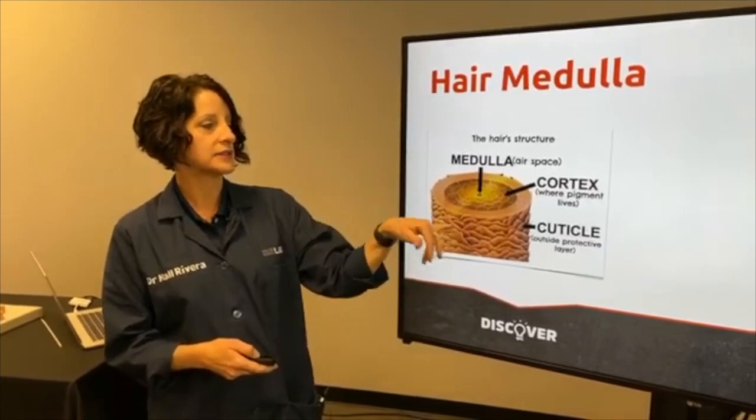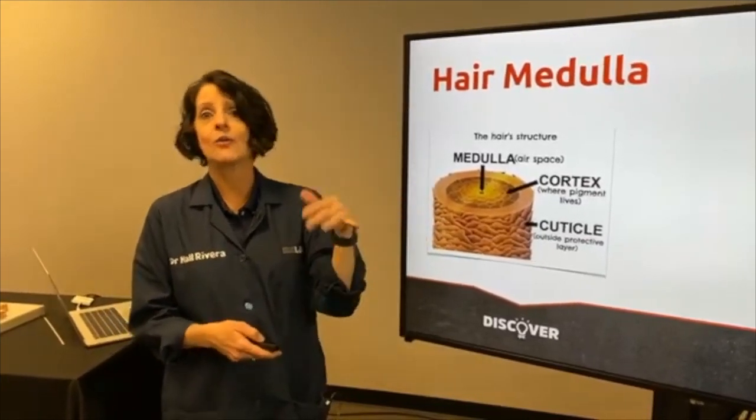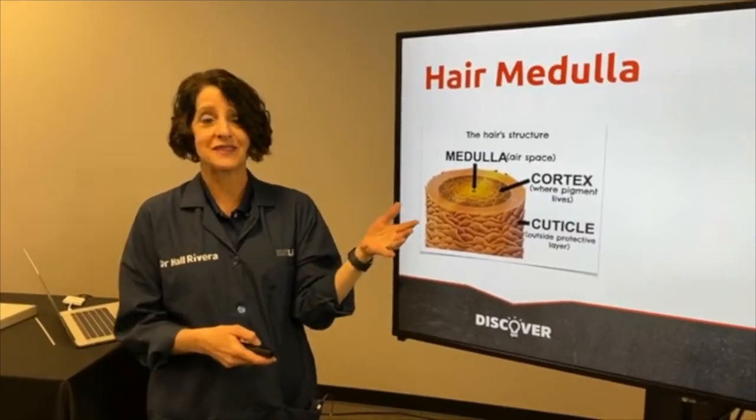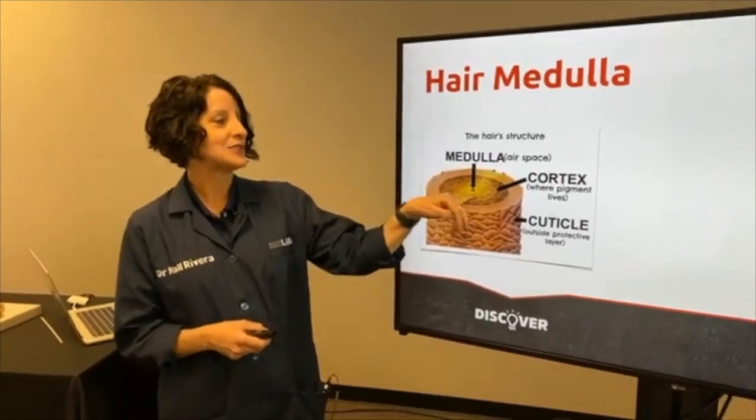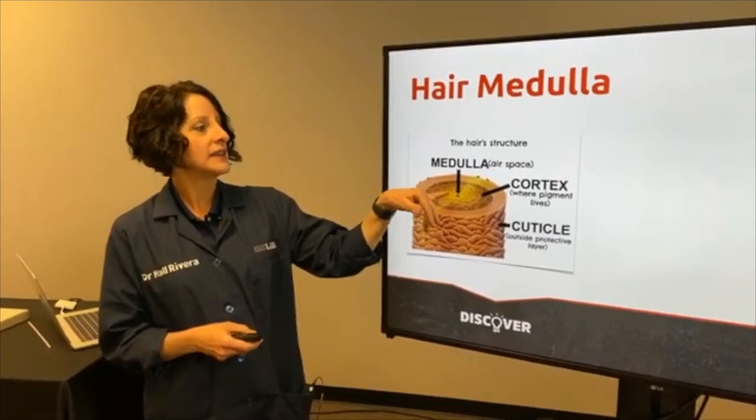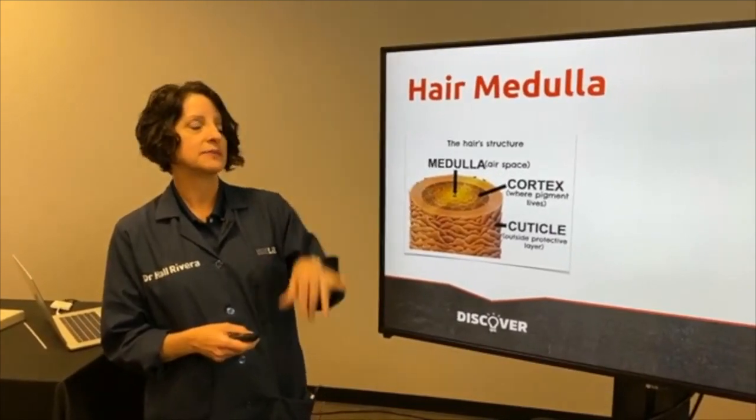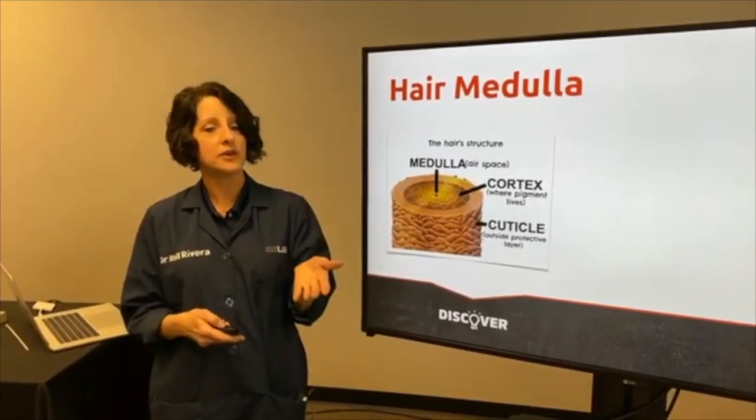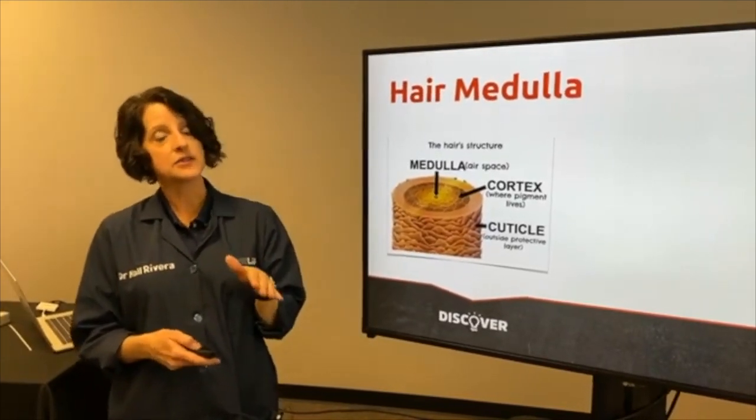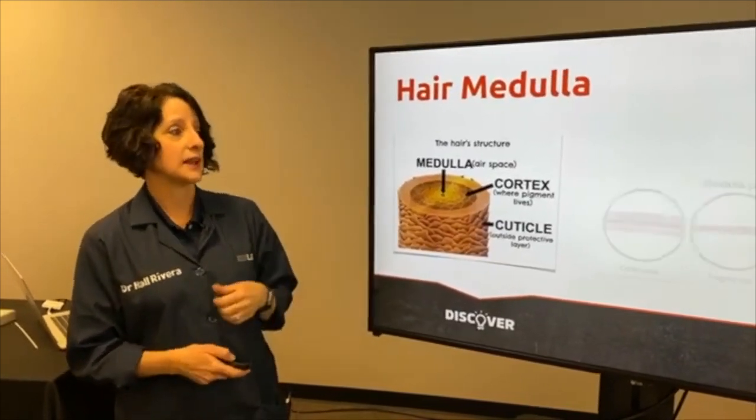The cuticle is that outside protective coating that does make your hair waterproof, and it has other features like that because God's pretty smart. Our cortex is where we do find our cells and our melanin color, and then in here is something we call the medulla, and it's basically what they call an airspace. But here is where we find something very important that we can look at under the microscope and distinguish between animal kinds.